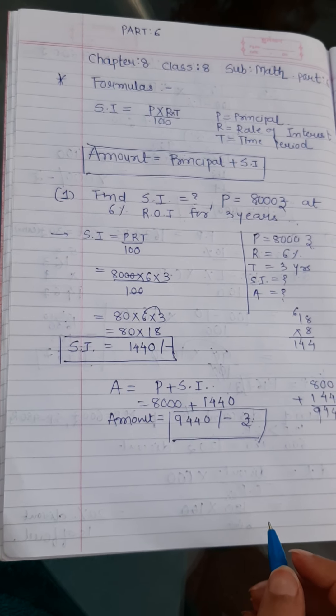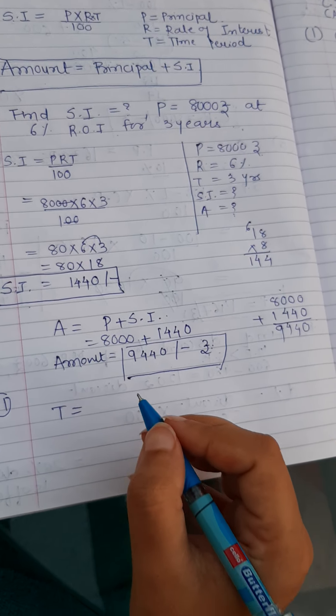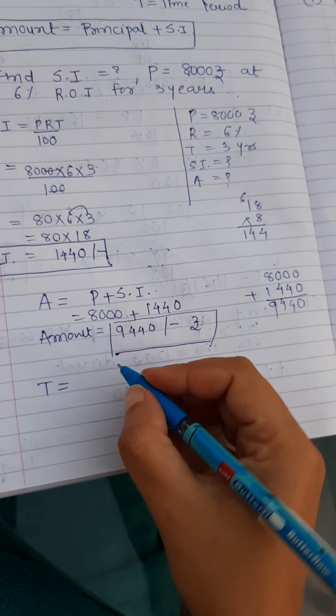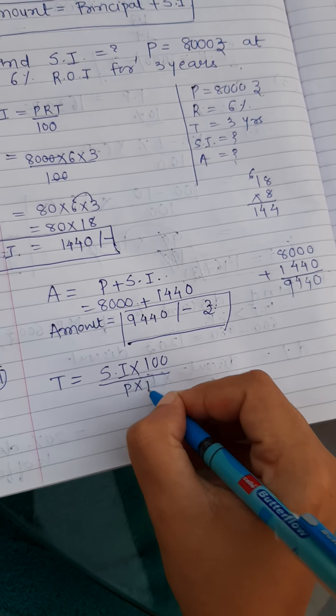So I will show you the inter-conversions as well. Suppose if you want to find T, so make T subject. So T is equals to what it will be? SI into 100 upon, now what is left? P into R. Right.